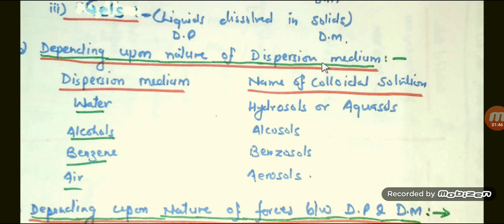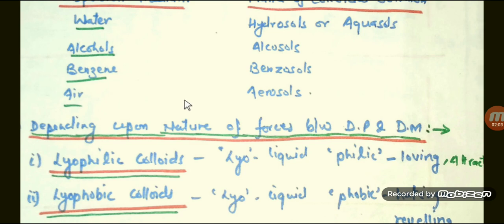Next type of classification is depending upon the nature of dispersion medium. If dispersion medium is water, then the colloidal solution is called hydrosol or aquasol. If the dispersion medium is alcohol, then it is called alcohol sol. If the dispersion medium is benzene, then it is called benzosol. If the dispersion medium is air, then it is called aerosol.